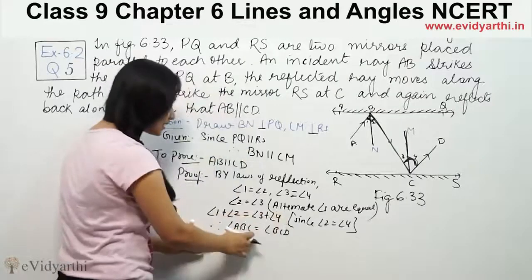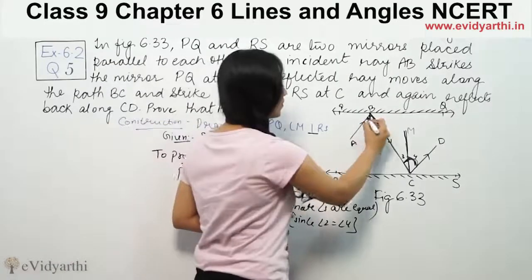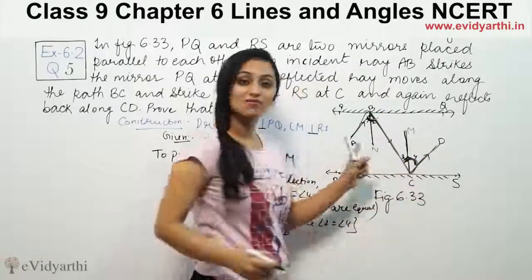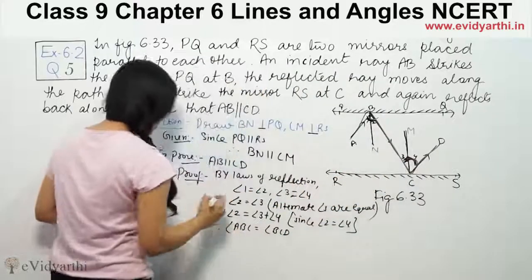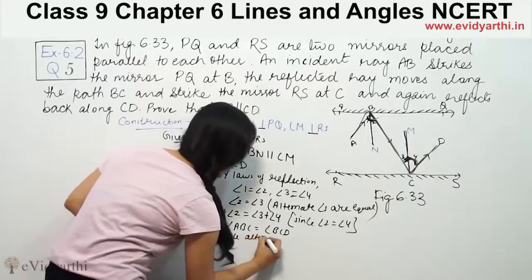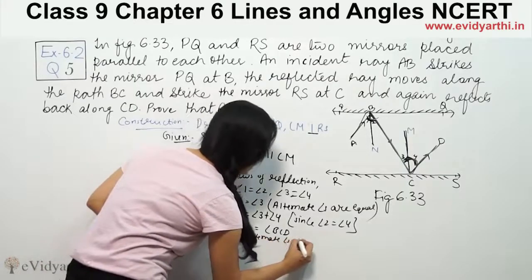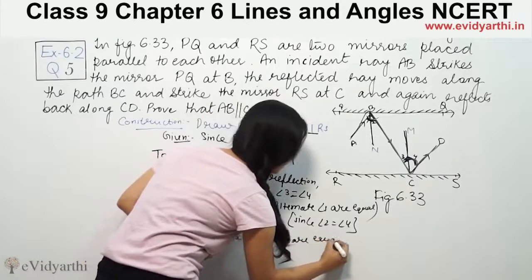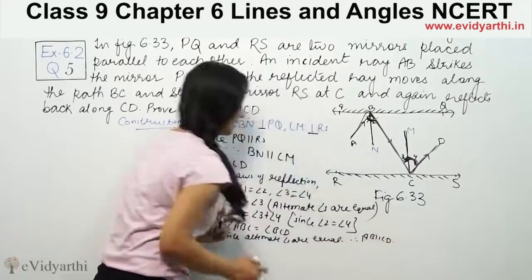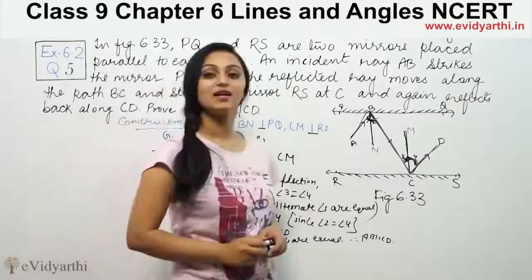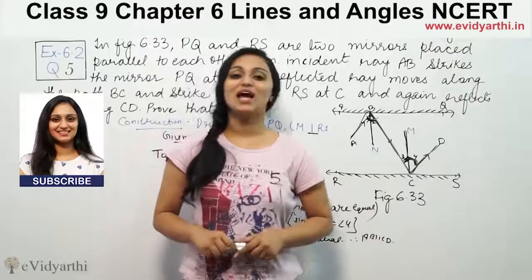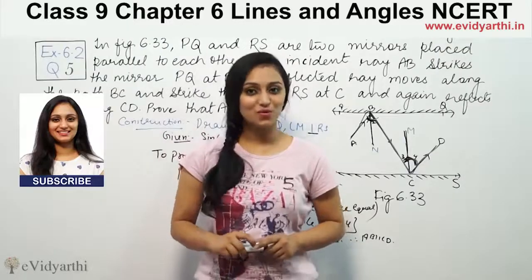Since alternate angles ABC and BCD are equal, AB is parallel to CD. This was question number 6 from exercise 6.2. Do watch the next video for more questions. Goodbye.